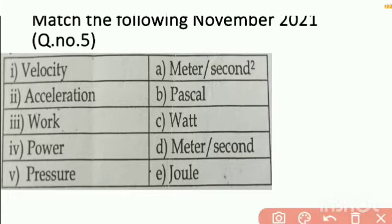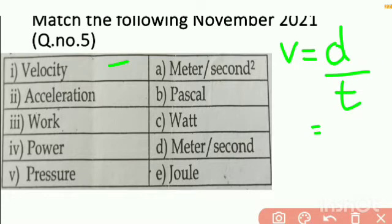Here first one is velocity and on this side units are given. Velocity, we know that the formula of velocity will be displacement by time. So displacement unit will be meter and time unit will be second. Therefore our answer is meter per second.